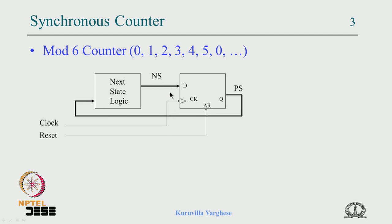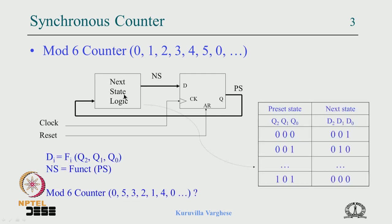When the clock comes, the next count becomes the present count — we call it present state. The next state becomes the present state upon the clock. This combinational circuit has to be designed using a truth table with inputs q2, q1, q0 and outputs d2, d1, d0, forming three equations: di = fi(q2, q1, q0) for i = 0, 1, 2. So the next state is a function of the present state, and all the intelligence is in this combinational circuit.